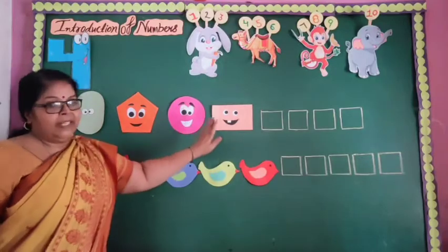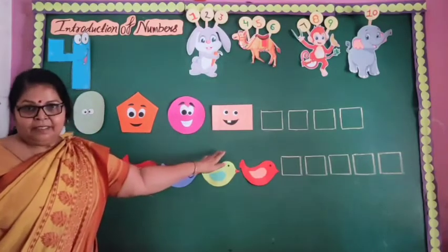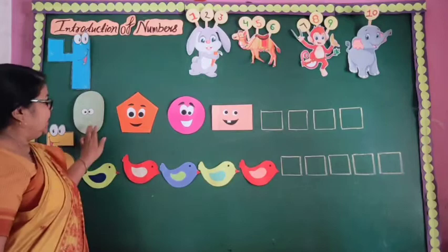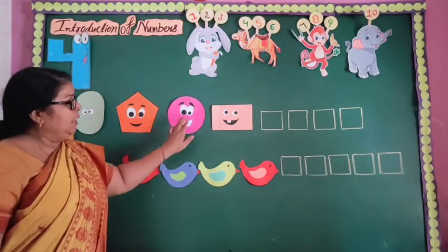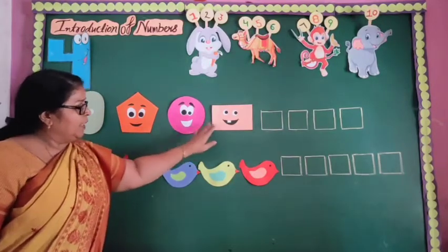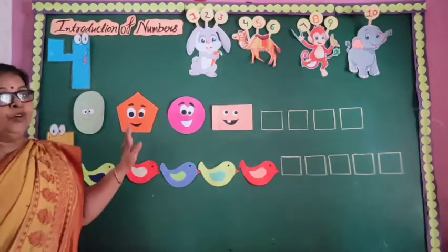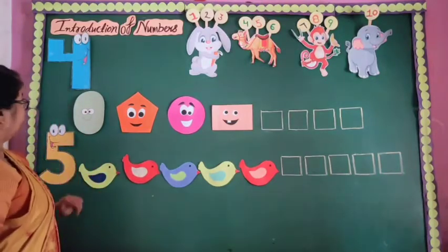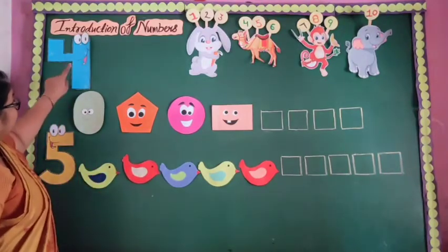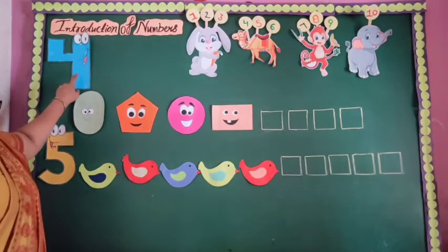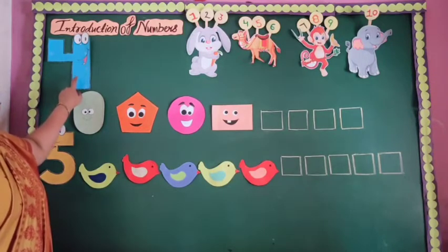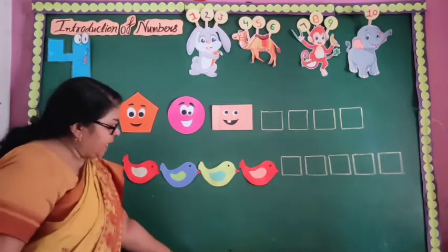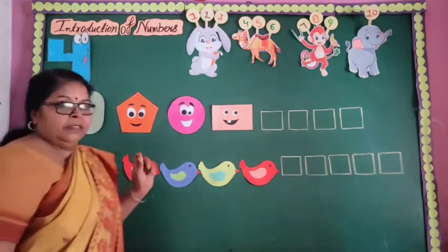How many cells are here? Let's count: 1, 2, 3, 4. Here are 4 cells. Okay? This number is 4. So let's write.